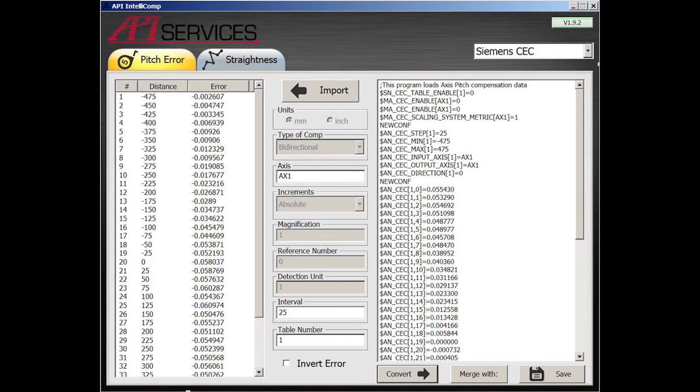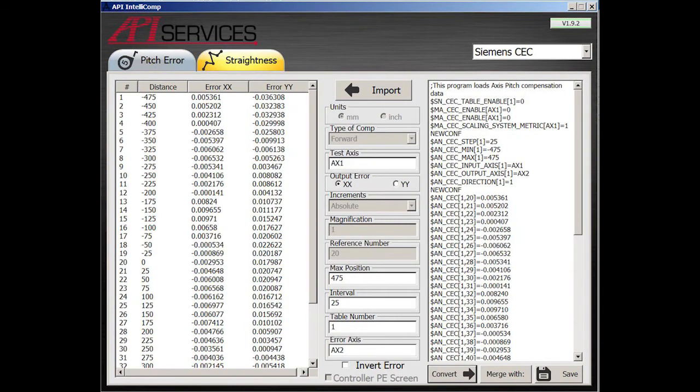After measurement is complete, API's IntelliComp software easily formats your compensation files to painlessly upload onto your CNC.